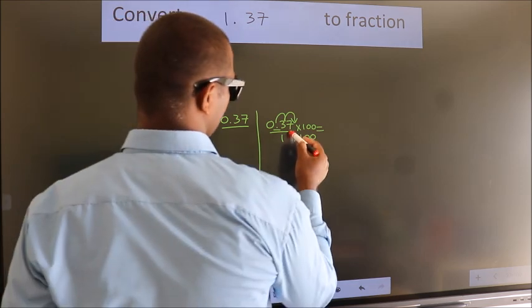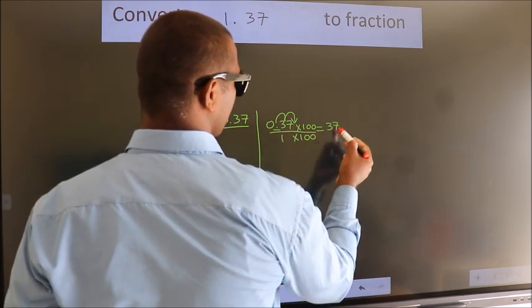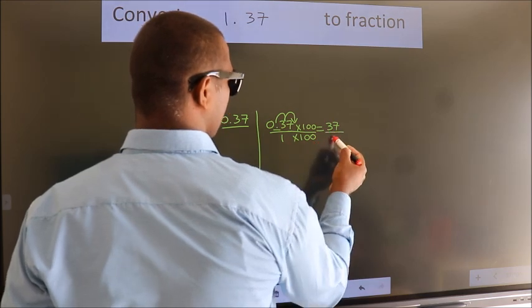Next, 0.37 into 100 is 37. 1 into 100 is 100.